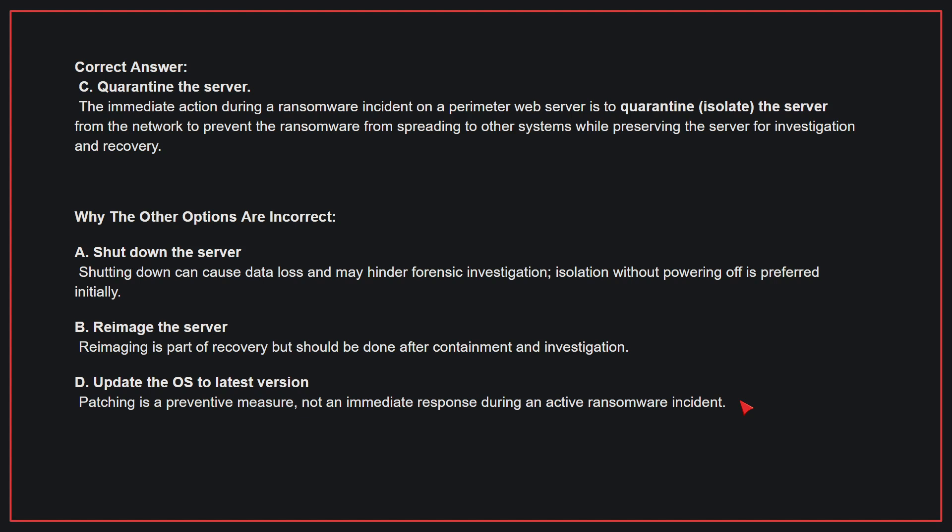Why the other options are incorrect? A. Shut down the server. Shutting down can cause data loss and may hinder forensic investigation — isolation without powering off is preferred initially. B. Re-imaging the server is part of recovery but should be done after containment and investigation. D. Update the OS to the latest version — patching is a preventive measure, not an immediate response during an active ransomware incident.